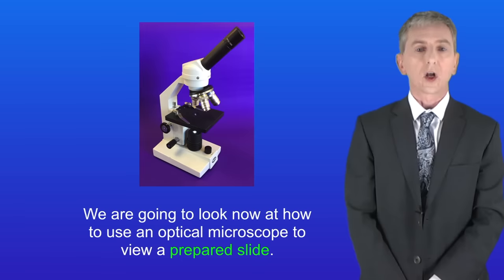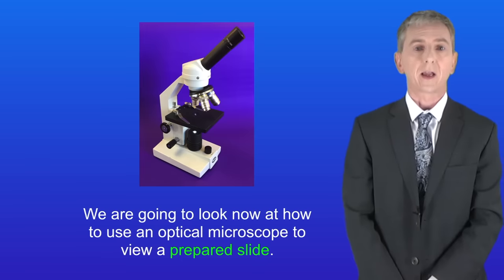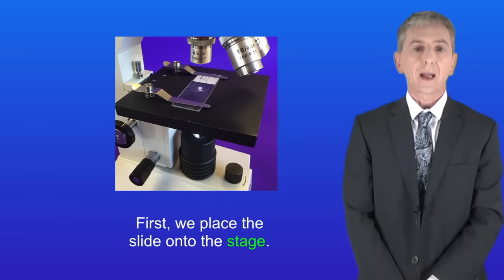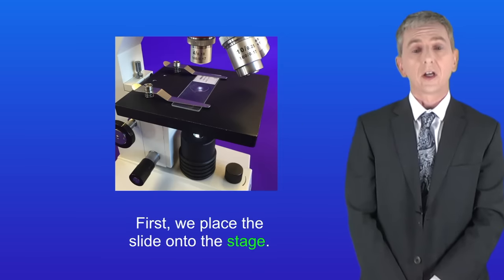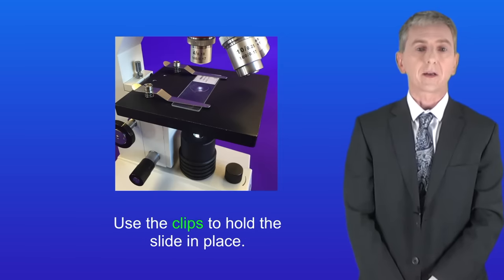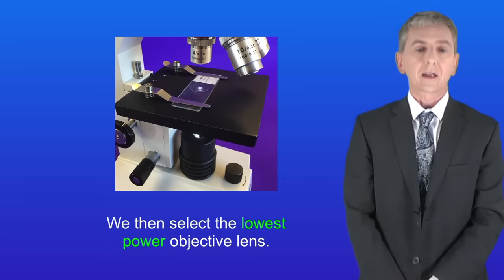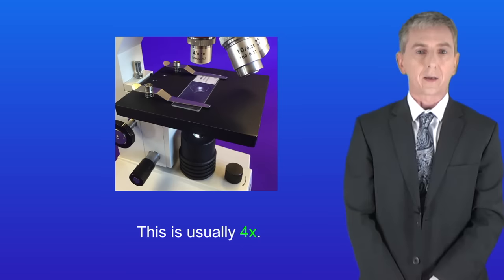We're going to look now at how to use an optical microscope to view a prepared slide. First we place the slide onto the stage and use the clips to hold the slide in place. We then select the lowest power objective lens. This is usually four times.